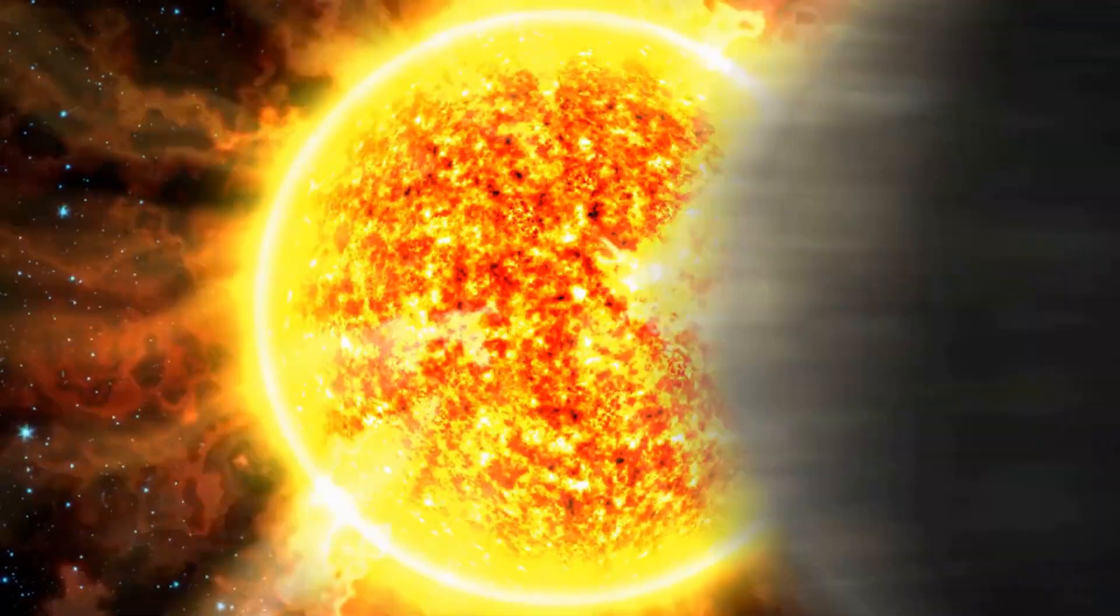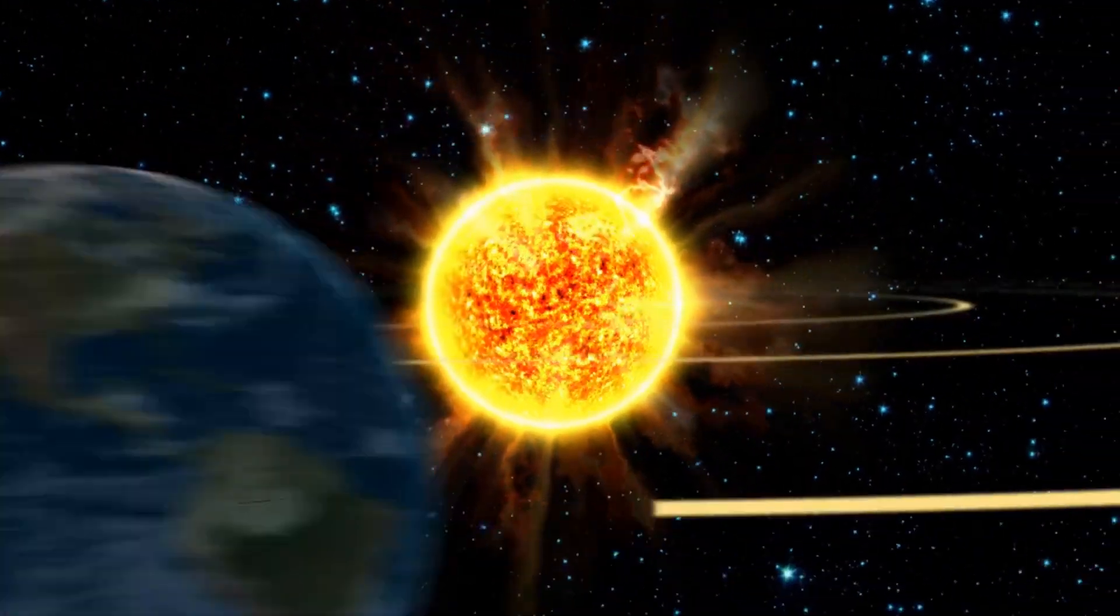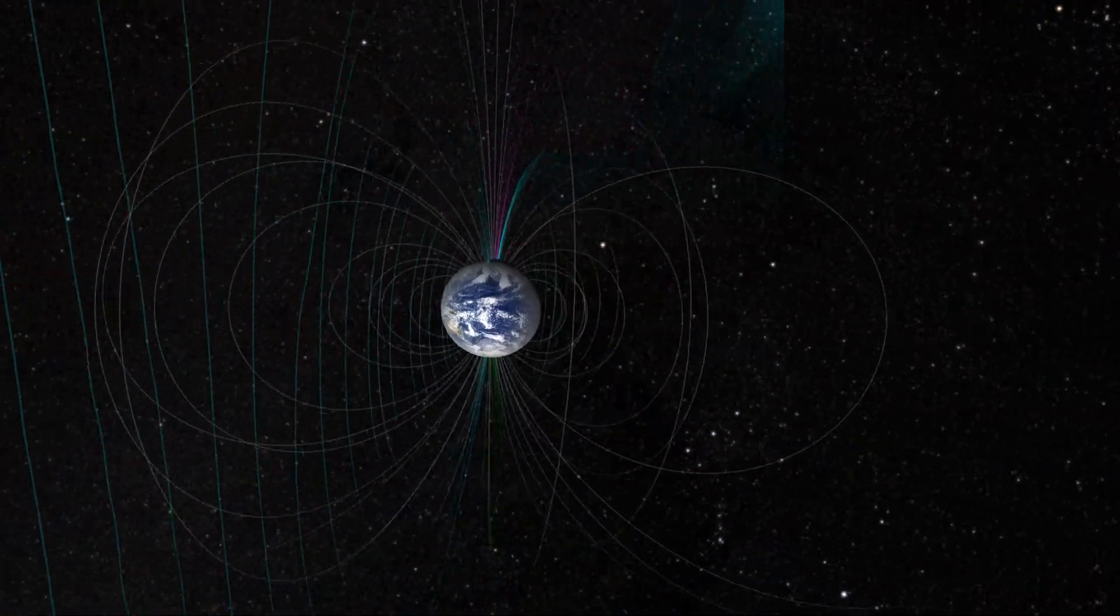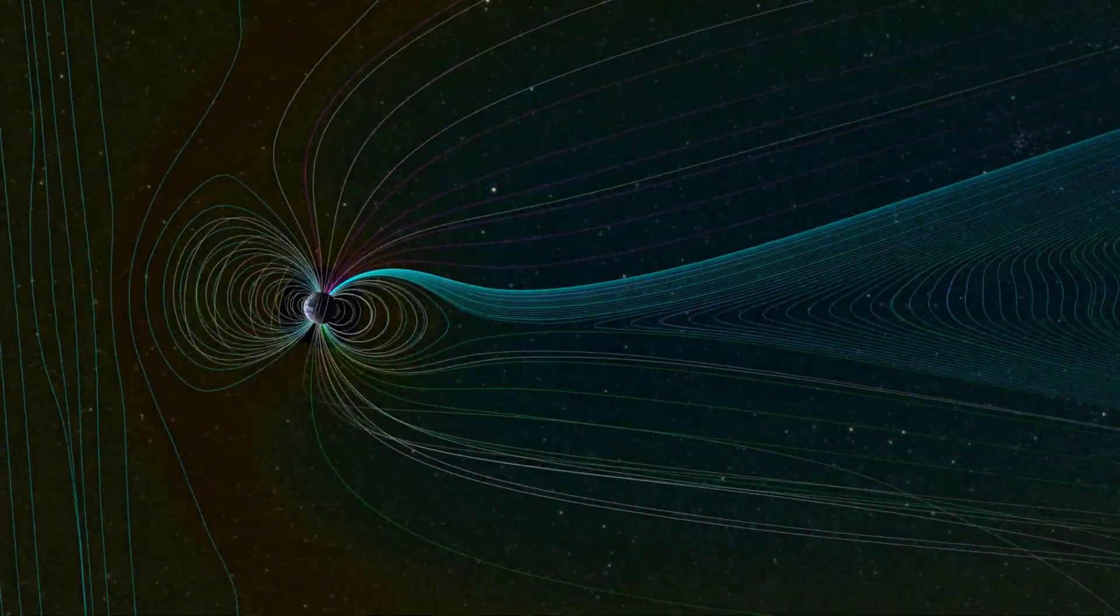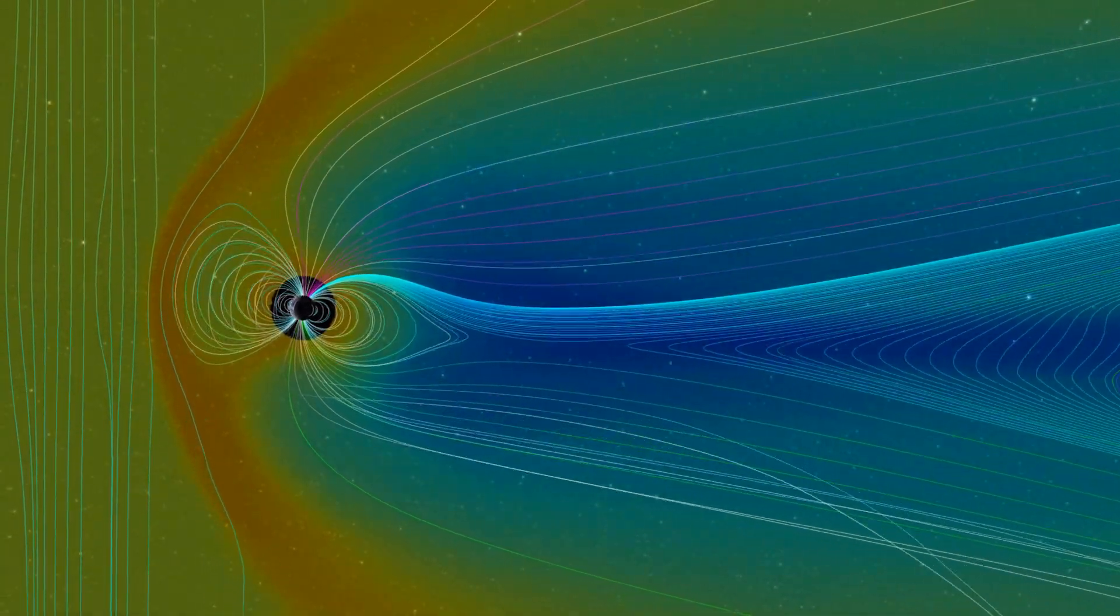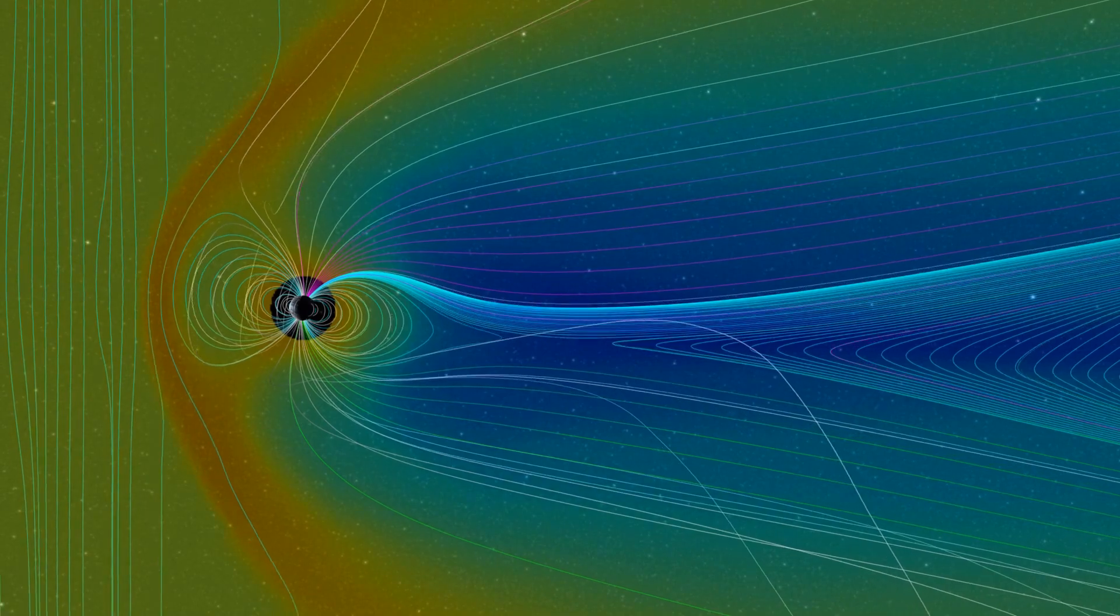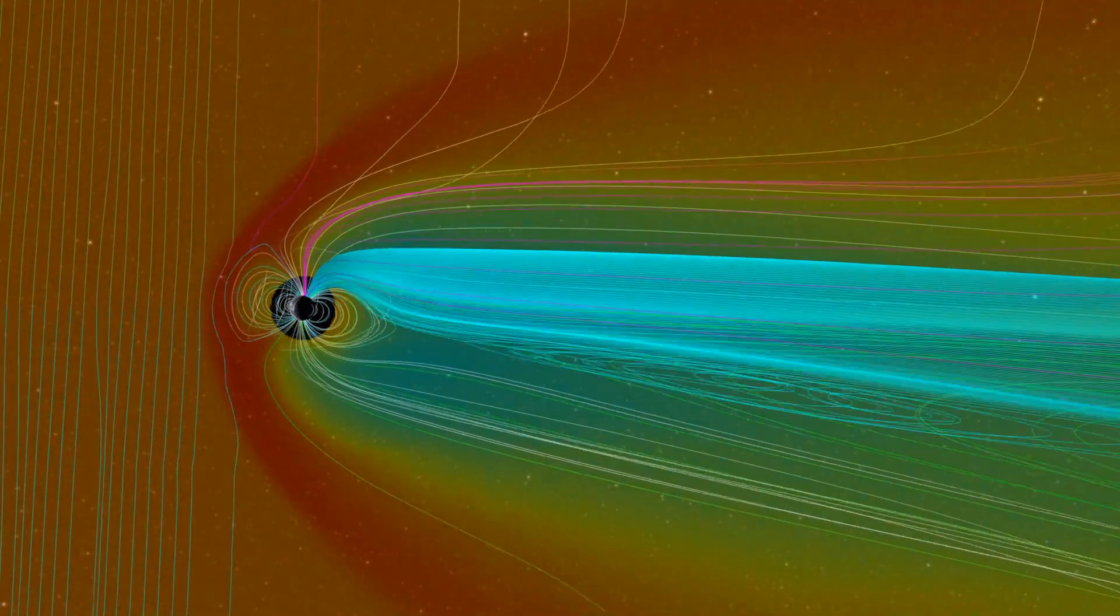The Sun, our nearest star, constantly emits a stream of charged particles known as the solar wind. These particles, which are mostly electrons and protons, travel at speeds of up to 1.5 million miles per hour and can have a significant impact on our planet's magnetic field and atmosphere.